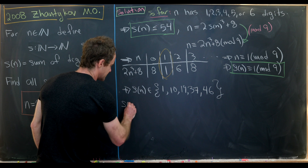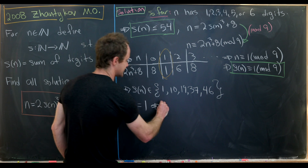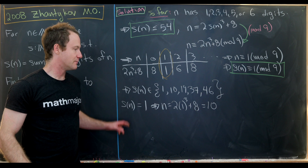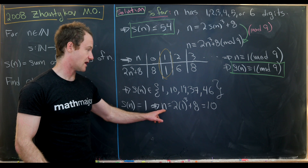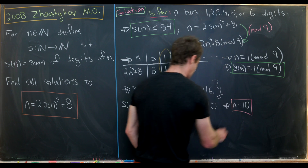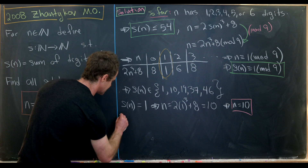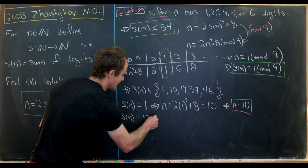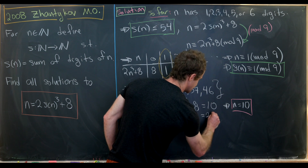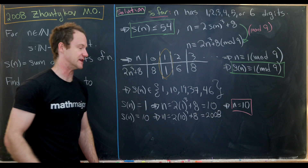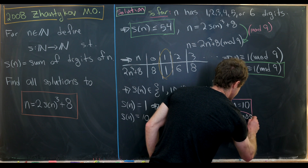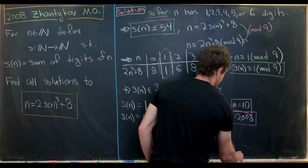If s(n) = 1, then n = 2·1³ + 8 = 10. And indeed s(10) = 1, so n = 10 is a solution. If s(n) = 10, then n = 2·10³ + 8 = 2008 — cute, since it's the year of the exam. And s(2008) = 2+0+0+8 = 10, so n = 2008 is also a solution.